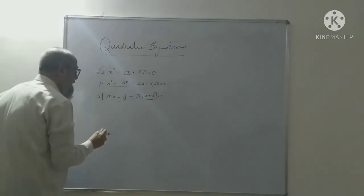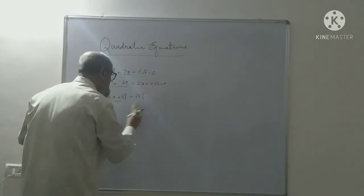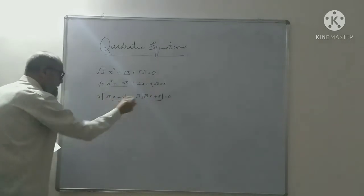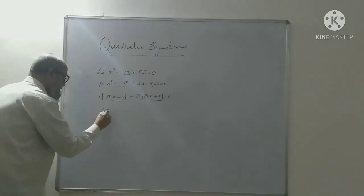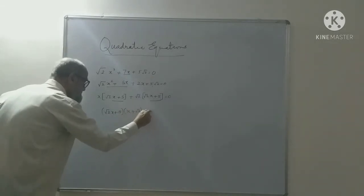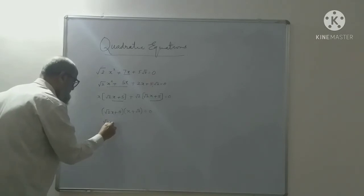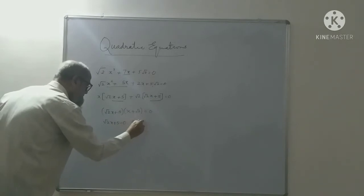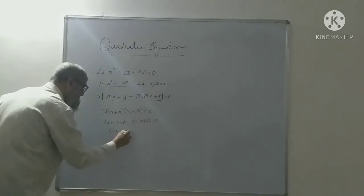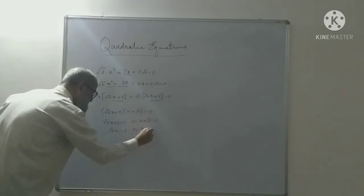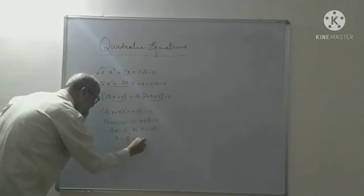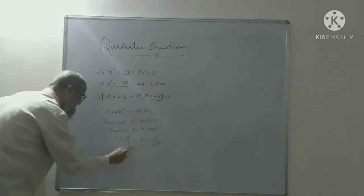So (root 2x + 5) is common in both parts, giving (root 2x + 5)(x + root 2) = 0. Therefore, root 2x + 5 = 0, which gives x = minus 5 by root 2, or x + root 2 = 0, which gives x = minus root 2. These are the two roots of the quadratic equation.